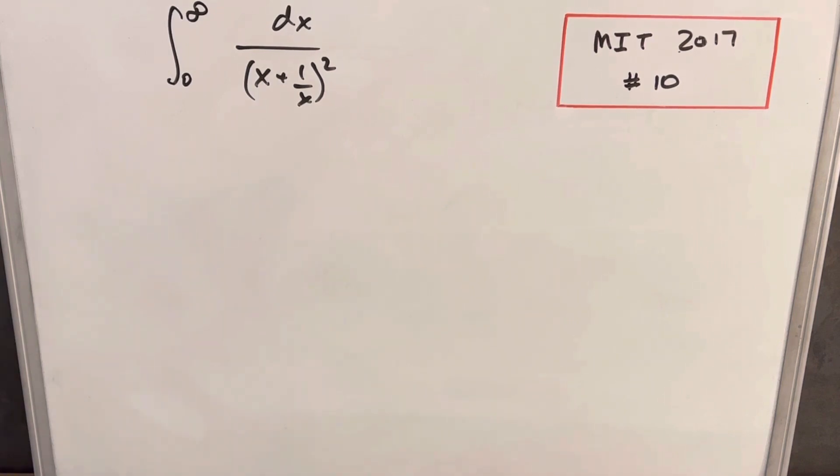Okay, this is MIT Integration B 2017, problem number 10. We have an integral from infinity to zero of dx over x plus 1 over x squared.